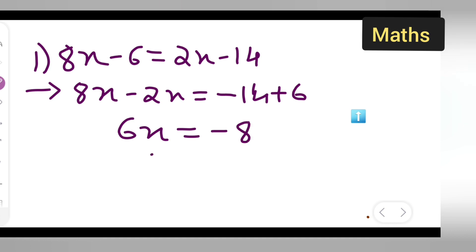So write down 6x is equal to, now negative 14 minus 6 will give you negative 8. So you will get x is equal to minus 8 upon 6.